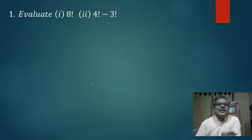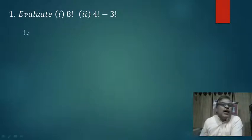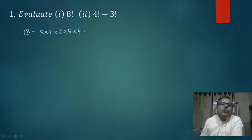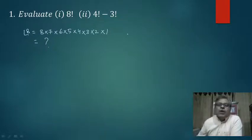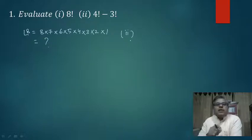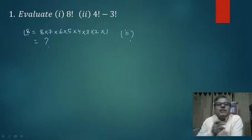Question number 1: Calculate the value of factorial 8. बहुत easy है — हम 8 को 7 से multiply करेंगे, 7 को 6 से, 6 को 5 से, 4, 3 × 2 × 1 — इन सभी numbers को multiply कर देंगे और answer मिल जाएगा। Simple multiplication is there. I hope those who are in class 11 know multiplication.